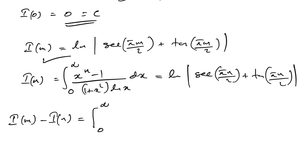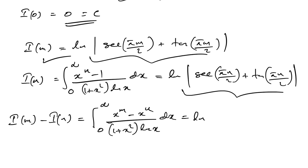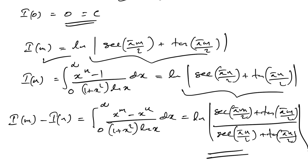Then I(m) minus I(n) equals the integral from 0 to infinity of (x to the m minus x to the n) over (1 plus x squared) times natural log of x, dx. By the property of logarithms, this equals the natural log of [secant(pi·m/2) plus tan(pi·m/2)] over [secant(pi·n/2) plus tan(pi·n/2)]. This is the final answer. If you like this type of video, please subscribe to the channel. Thank you for watching.